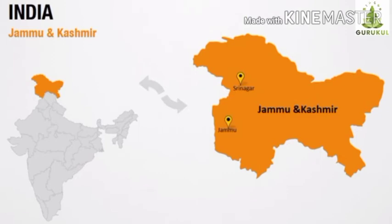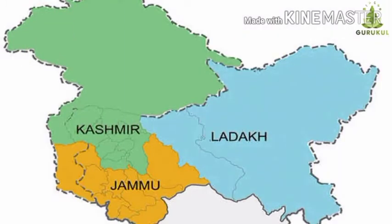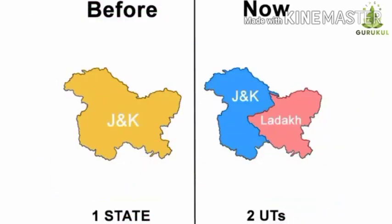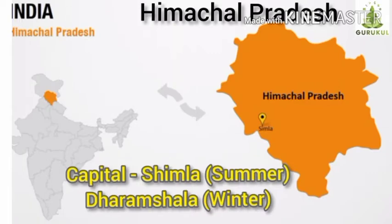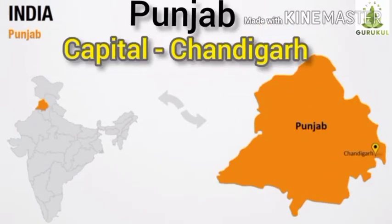Jammu and Kashmir is the first one. Jammu and Kashmir was one state of India as per our workbook, but now it is divided into two regions — Jammu and Kashmir, and Ladakh — on 31st October 2019. These two are now administered as union territories by India. So the first state is Himachal Pradesh, with capital Shimla in summer and Dharamshala in winter. Next, Punjab — capital is Chandigarh.